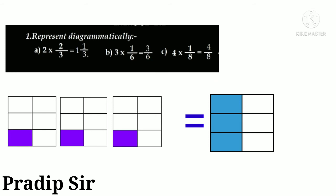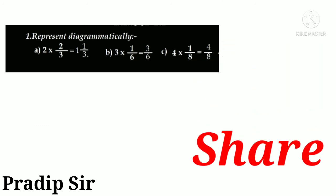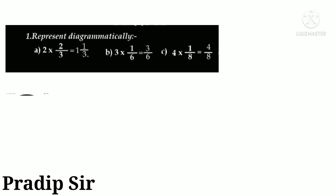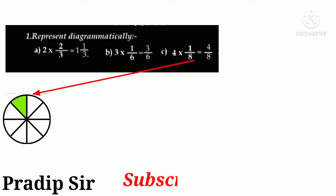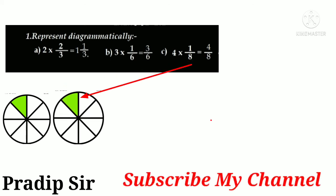Next, 4 × 1/8. That means we divide things into eight parts and one part is shaded. Like that, four figures are there because it's four times, so we'll draw four figures.